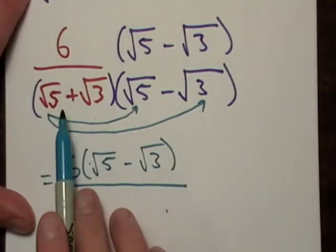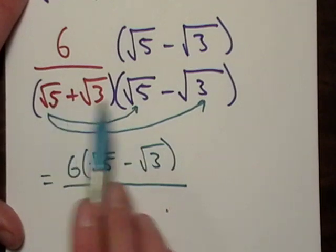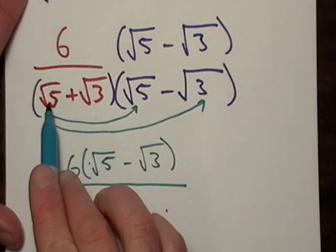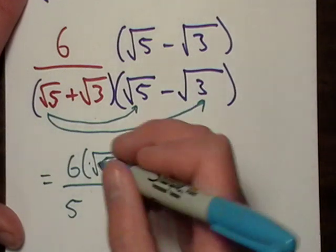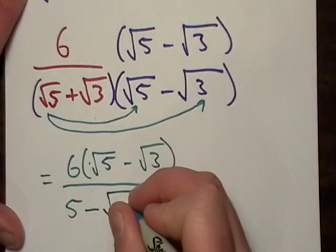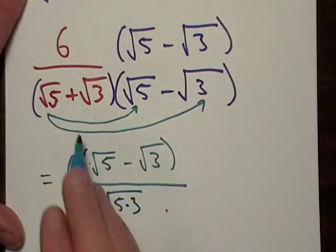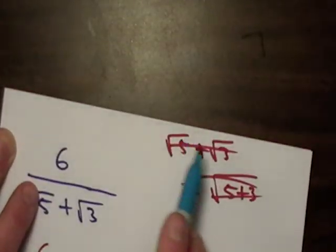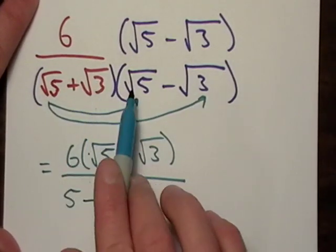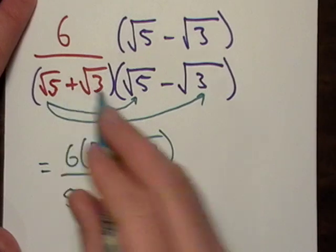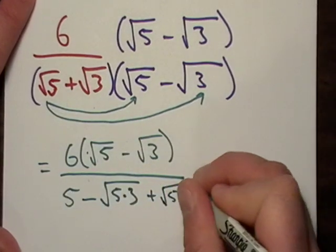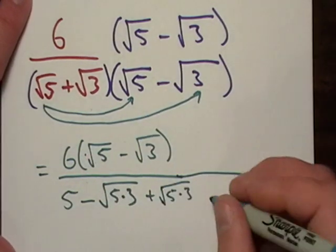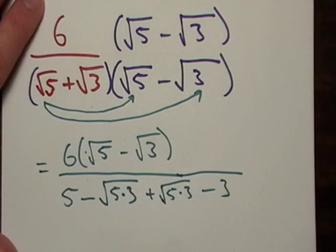I'm going to go first term times the first—that's just 5. √5 times √5 is 5. I'm going to take √5 times √3, but it's negative. If I multiply √5 by √3, I get to stick them together—not in addition, so that's good. √3 times √5, and both of these are positive. Then √3 times negative √3, well that's just negative 3.